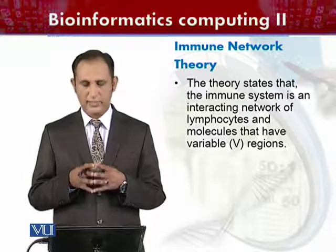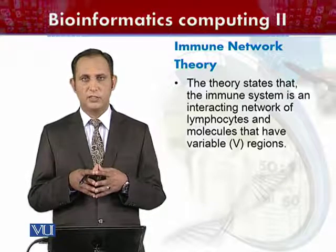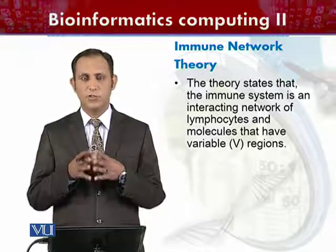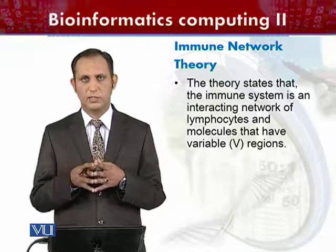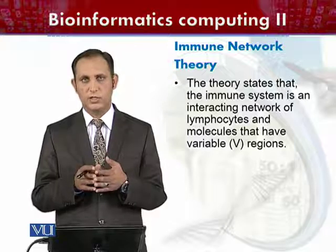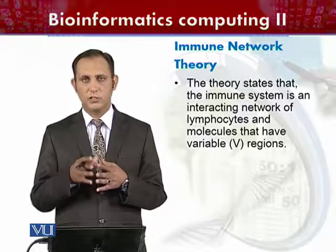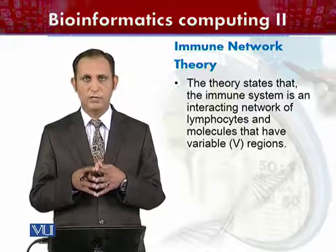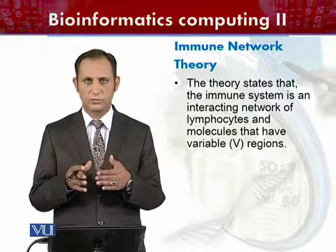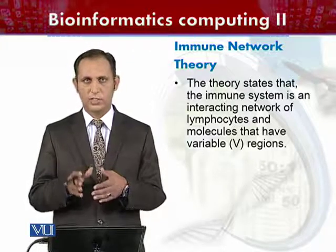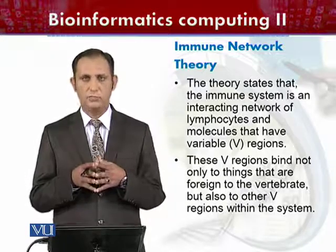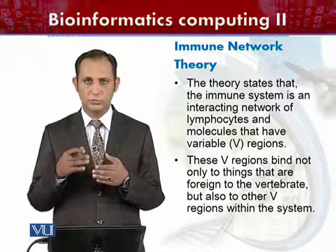The theory states that the immune system is an interacting network of lymphocytes and molecules that have variable V regions. This network of molecules with variable V regions forms an important part of the immune system. The molecules which have V regions are also part of this immune network and interact with each other for immunity detection and binding.